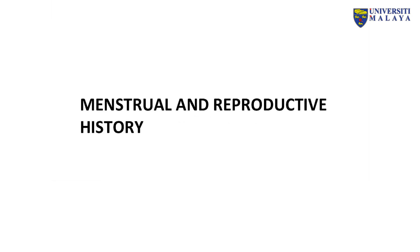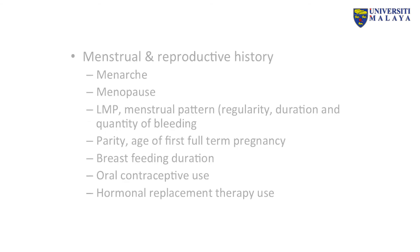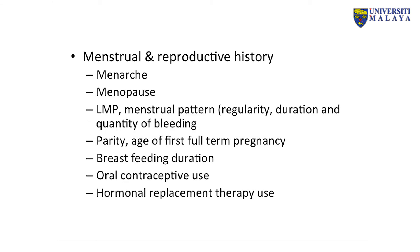Menstrual and reproductive history. We need to know the age of menarche, menopausal status and age of menopause if applicable, last menstrual period, and menstrual pattern including regularity, duration, and quantity of bleeding. The parity of the patient and most importantly the age of first full-term pregnancy. Breastfeeding duration in total. Any use of oral contraceptive pills — the types and duration — and any hormonal replacement therapy use and its duration.